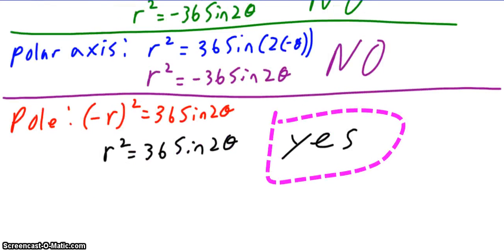What about the pole, though? This one does work because all I do is plug in a negative r. So negative r quantity squared becomes r squared, which is the same as the original, so I get r squared equals 36 sine of 2 theta. So yes, it is symmetrical to the pole.